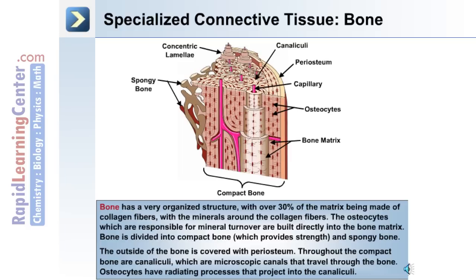Bone is divided into compact bone, which provides strength, and spongy bone. The outside is covered with periosteum, and throughout the bone is canaliculi, which are microscopic canals that travel through the bone. Osteocytes, the bone-forming cells, have radiating processes that project into the canaliculi.